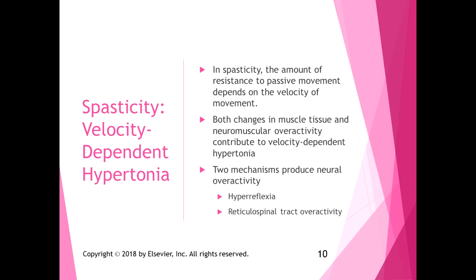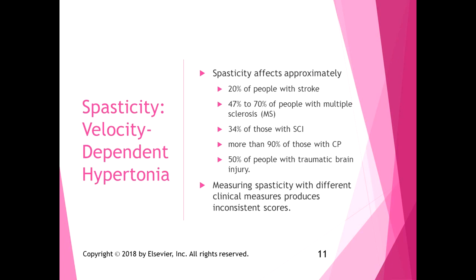With slow movements things can work pretty well, but at normal rate movement you may get spasticity. Spasticity affects approximately 20% of people with stroke, 47–70% of people with MS, 34% of people with spinal cord injury, more than 90% of people with CP, and 50% of people with traumatic brain injury. You can note spasticity clinically, though scores can be inconsistent.